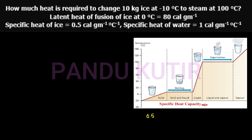At 0 degrees centigrade we have both ice and water — a solid and liquid mixture. The water is at 0 degrees centigrade in the liquid state. This region covers 0 degrees centigrade to 100 degrees centigrade, where the heat capacity is calculated using the CGS system.